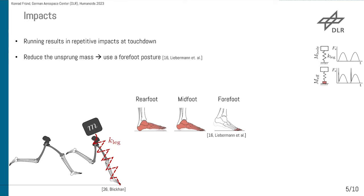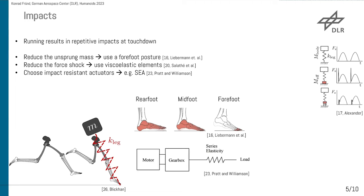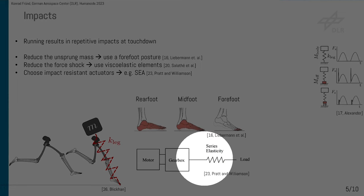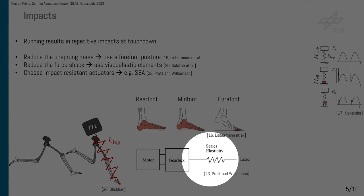Now we further want to reduce the force shocks in our ground reaction force, and we can do that with viscoelastic elements — for example, like the human with the fat bubbles in his heel. We might still have residual force shocks, so we need to choose impact-resistant actuators, like series elastic actuators, where we have a spring in series with our load on the gearbox, to protect the gearbox teeth from the high force shocks.